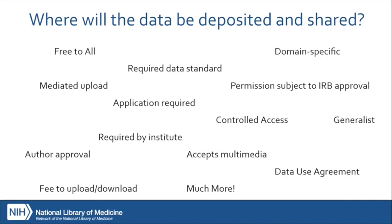Repositories can provide different levels of permission to access the data, such as controlled access, author approval required, or permission subject to IRB approval. Repositories can also have limitations or restrictions on submitting or uploading data — for example, restricted to a particular funder, requiring a specific data standard, or only accepting certain data types. Some repositories may also require a fee either at the time of submission or for access and use of the data by researchers after depositing.